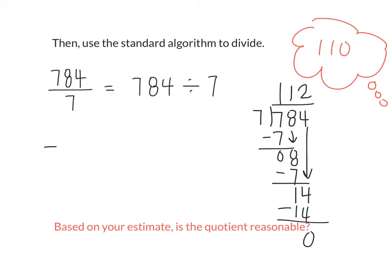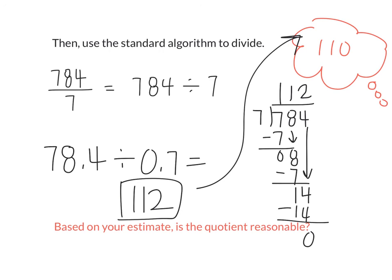So therefore, seventy-eight point four divided by zero point seven is one hundred and twelve. Based on our estimate of one hundred and ten, is our answer reasonable? Yes. And that's how we can use estimation to help us check. Again, this problem is really asking, how many times could I have a group of seven tenths be in seventy-eight point four? And how many groups of seven tenths are there in seventy-eight point four? One hundred and twelve.